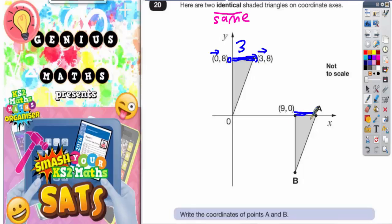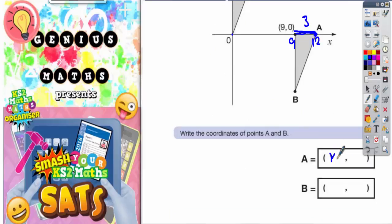That must mean this triangle is also going to have a side length of 3. And if we are on 9 along here and it's got a side length of 3 this must take us to 12 along. But it's also 0 up because it's level with the 0. So point A is nice and straightforward. It should be 12 along and 0 up.